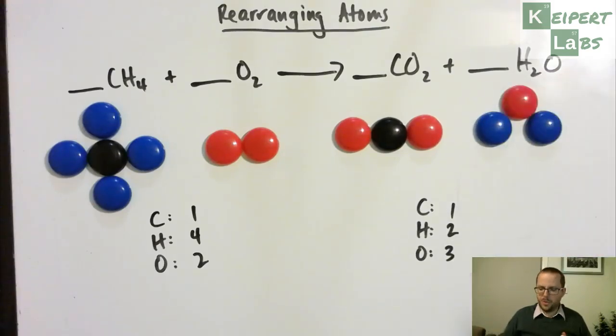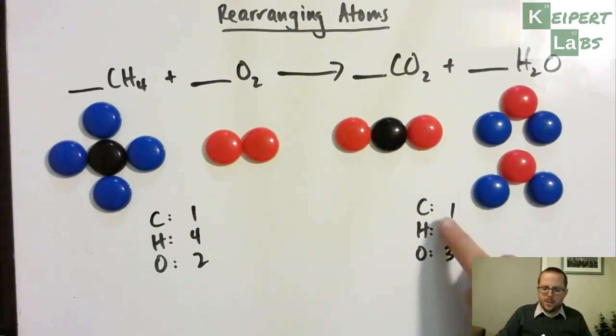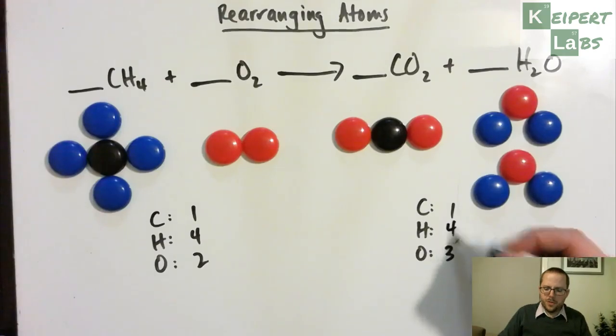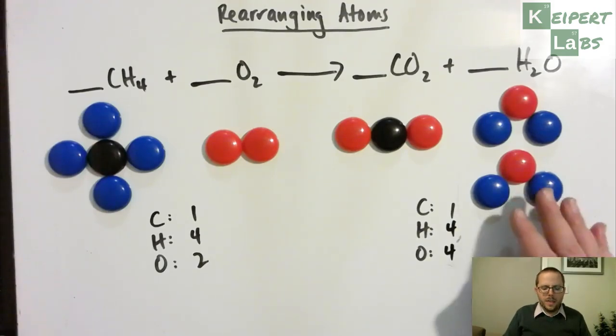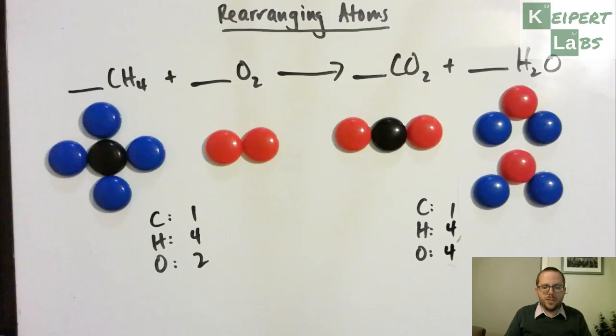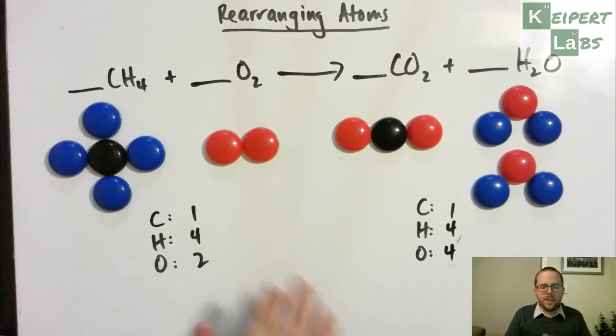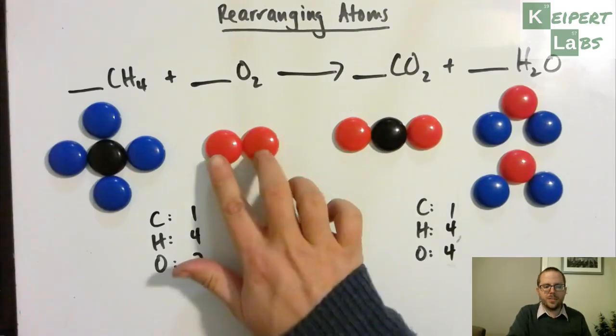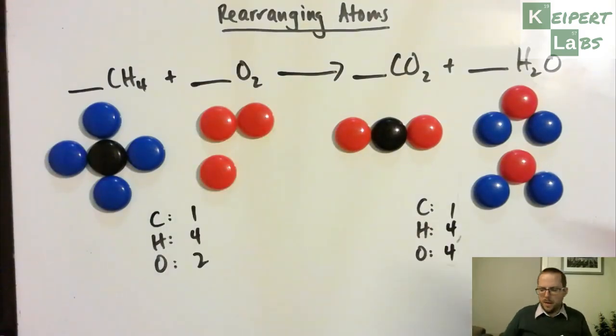So that's the first thing that I'm going to adjust. I'm going to add in an additional water molecule. That's going to take me to four hydrogens. And now I've got four oxygens overall. Now that is too many oxygens. I've got four over here and I've got two over here. But you can see that that's also going to be quite an easy thing to fix because I can add in an extra oxygen gas molecule and that takes me up to the number that I need.